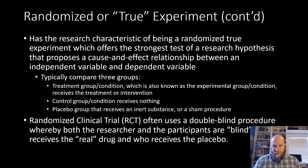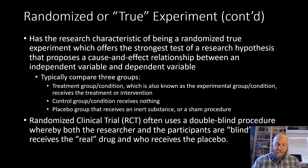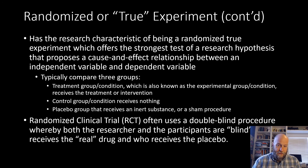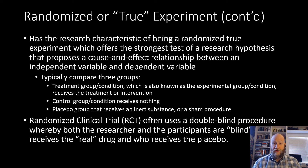This is best exemplified in treatment outcome efficacy research — what's called a randomized clinical trial, often considered the gold standard of the gold standard. It's often referred to as a double-blind procedure, where both the researcher and the participants are blind to who's receiving the real treatment, drug, or intervention. In a drug trial, it makes sense that the person receiving the medication doesn't know which level they're in. If you really want to test the placebo effect, everyone is told they may or may not be receiving the experimental drug — they don't know — and that way you're controlling for that influence.